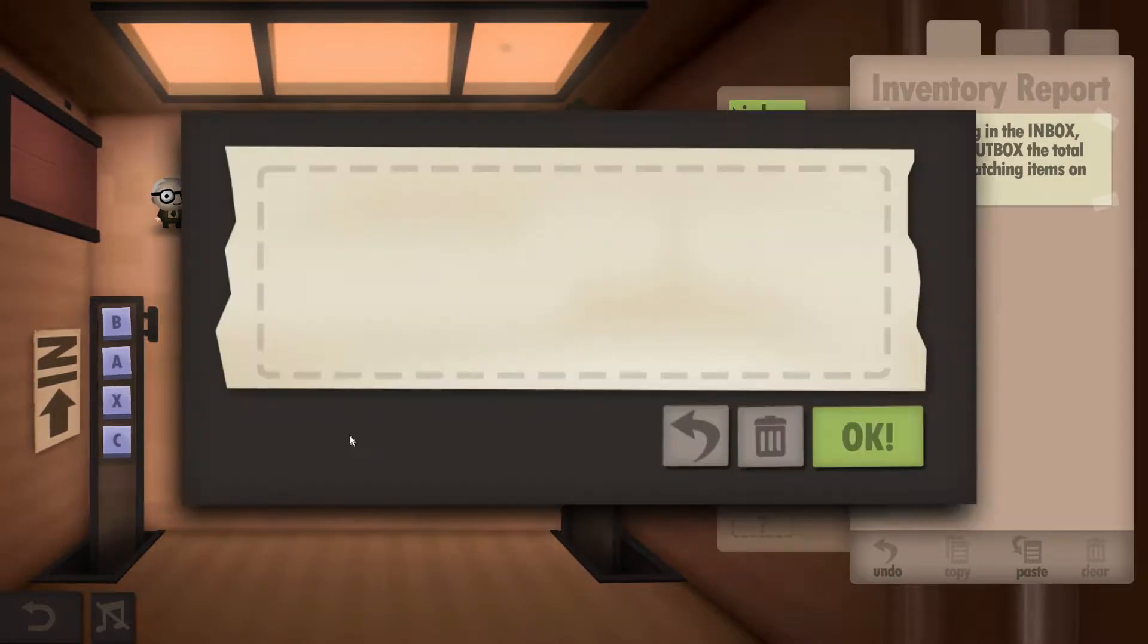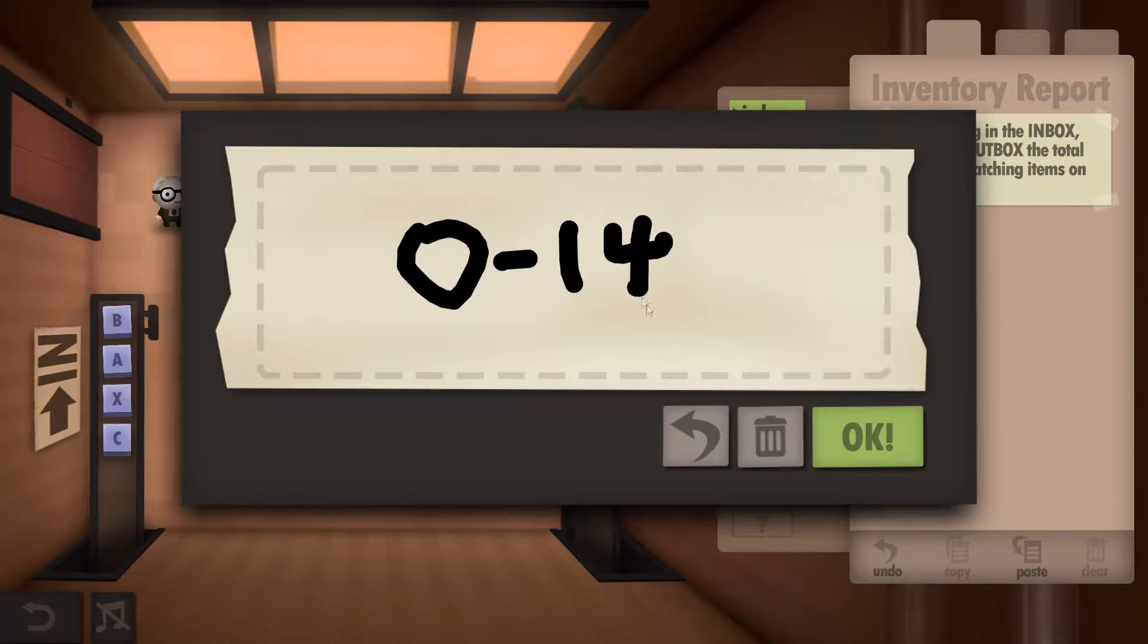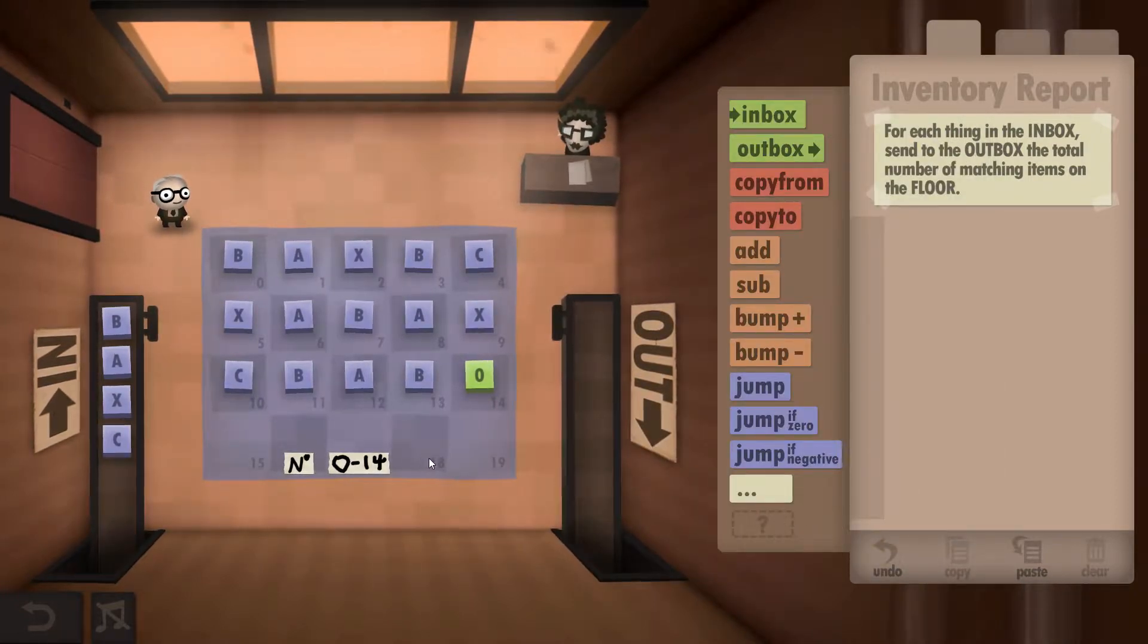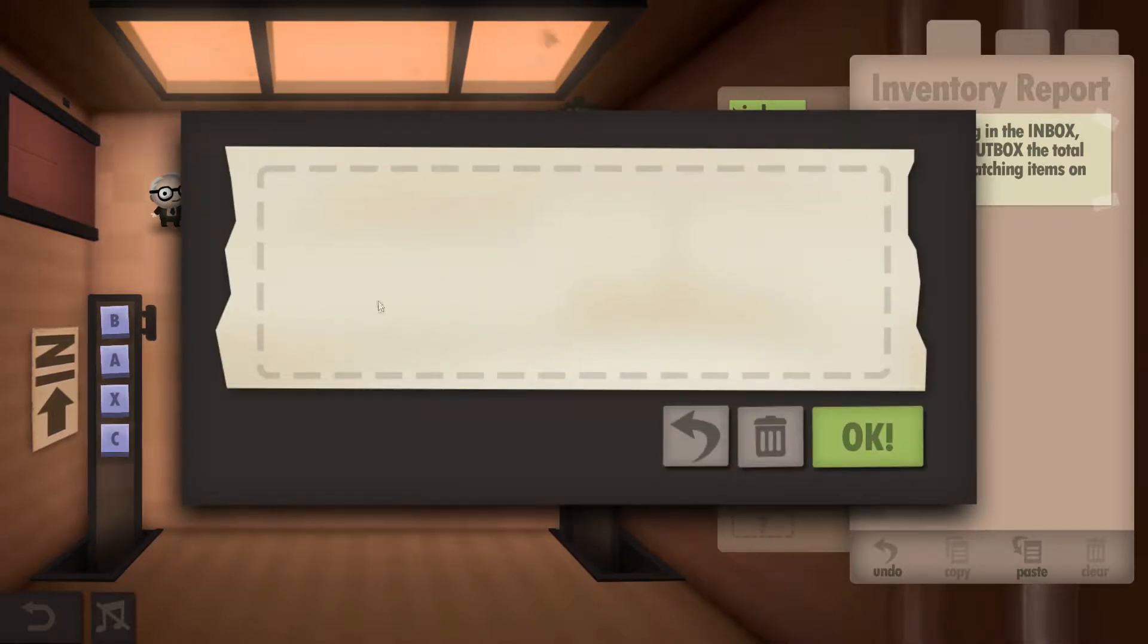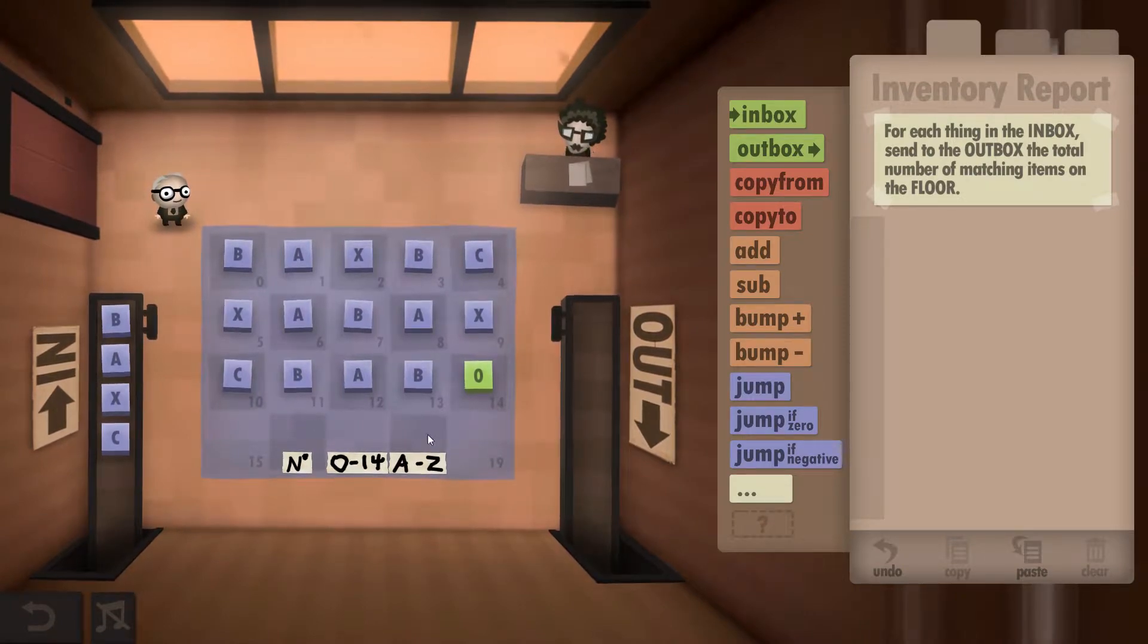So I'm just going to put 0 to 14 to make sure I've got the right cell. In this one here, we're just going to keep a copy of the letter so we know what we're working from, so A to Z like so. Now that should make things a lot easier.